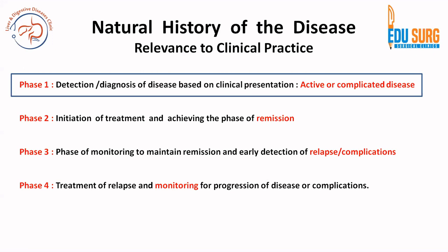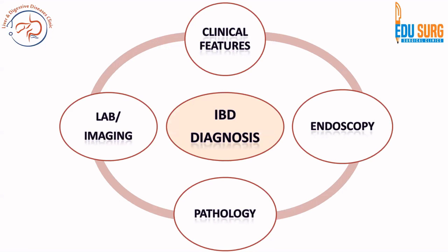A patient can present with active disease or with complicated disease. We will see how the diagnosis of IBD is made to reach phase two, which is initiation of treatment. When we talk about IBD diagnosis, there are four key pillars: first, clinical features — and there are many differential diagnoses of IBD that clinical features help point towards or away from. Second, laboratory investigations to understand whether the patient has IBD.